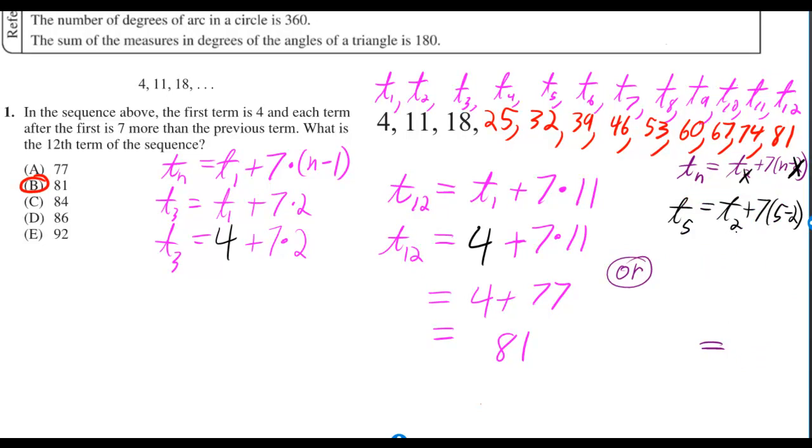So, for instance, to go from the second term to the fifth term, you would have to add 5 minus 2 sevens. In other words, 3 sevens.